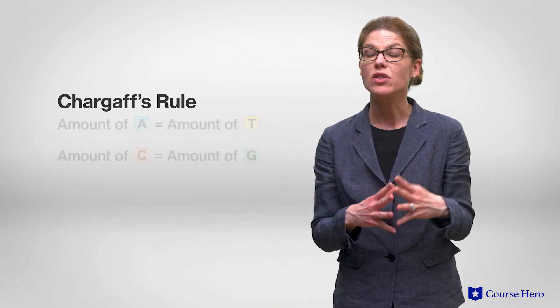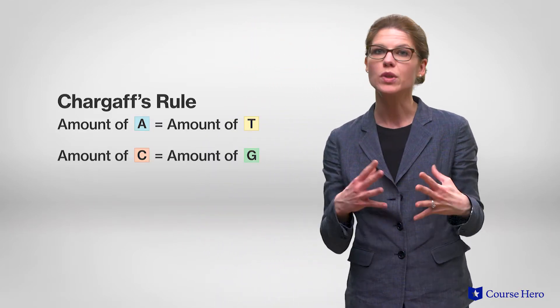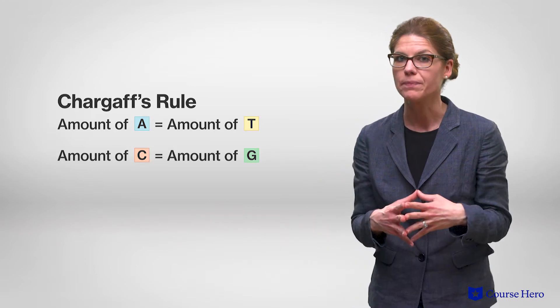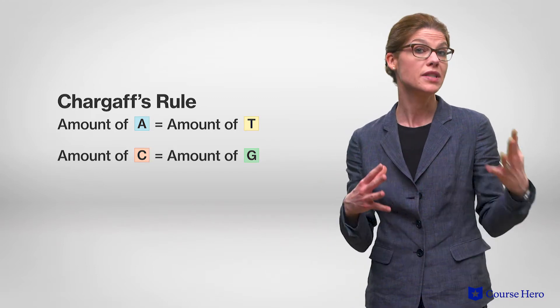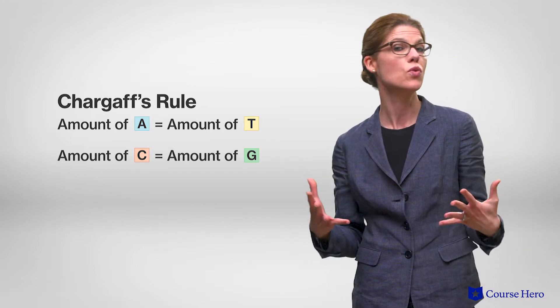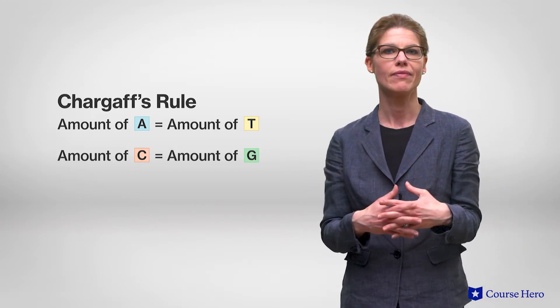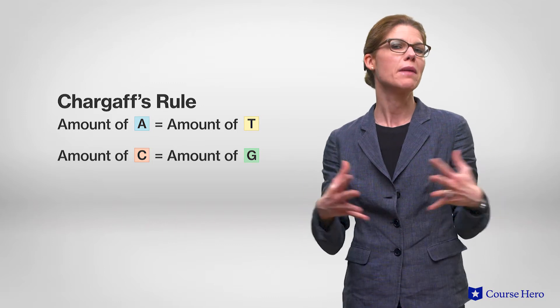Before Watson and Crick proposed the double helix model for DNA, another scientist, Erwin Chargaff, had reported finding that in the DNA of any given species, the amount of adenine was equivalent to the amount of thymine, and the amount of cytosine was equivalent to the amount of guanine. This became known as Chargaff's rule, but the basis for these rules couldn't be explained until the discovery of the double helix.